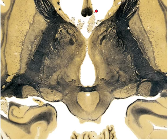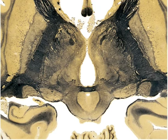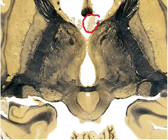We have the fornix right here — the body of the fornix. And then we have the septal nuclei, a little hard to see but it's right up there. And then we have the choroid plexus, involved in creating CSF.